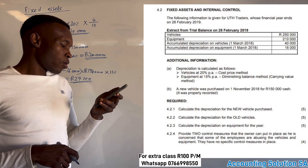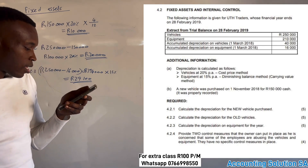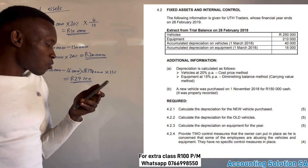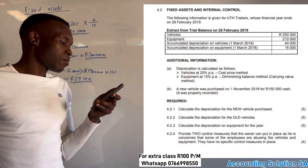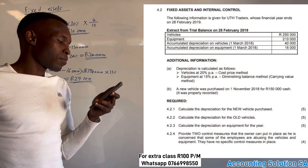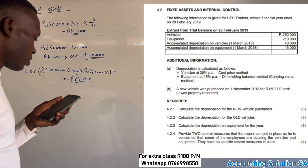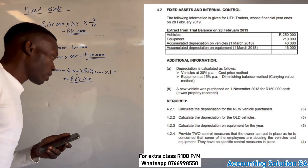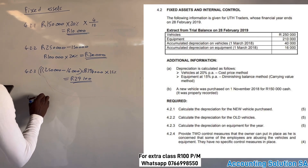Question 4.2.4: Provide two control measures to be put in place to guard against the abuse of vehicles. The owner has noticed that some employees are abusing the vehicles and equipment, and there are currently no measures in place. We need to provide two points.